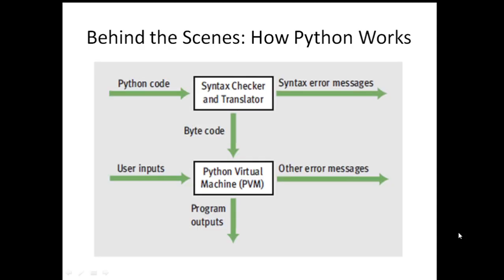When you run a Python program, there is a syntax checker and translator. It checks for syntax errors in the script. If there are any errors in any line, it stops execution and displays the error message, which you must correct. If there are no errors, the script is converted to bytecode. This bytecode is an independent unit and is given to the Python Virtual Machine.